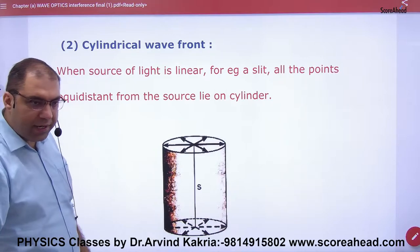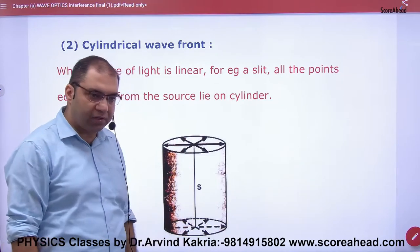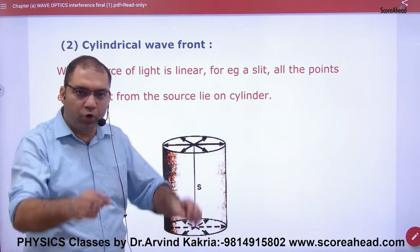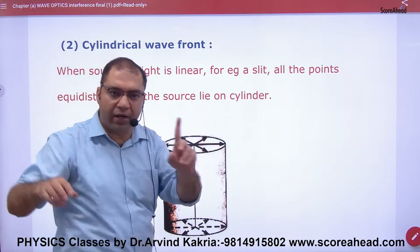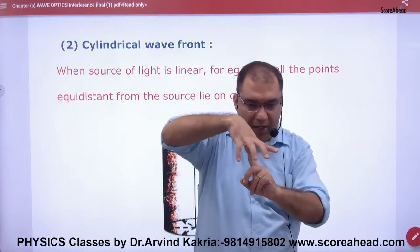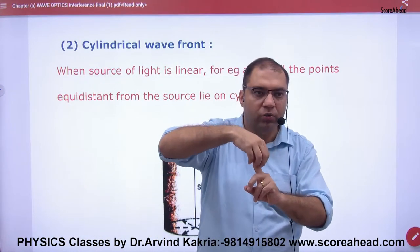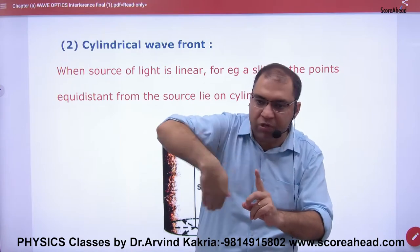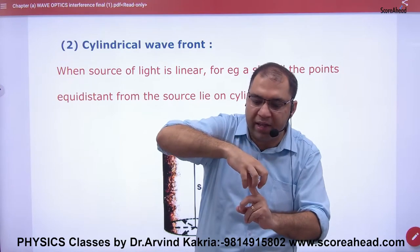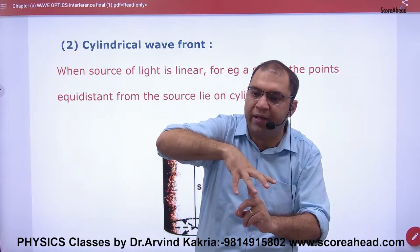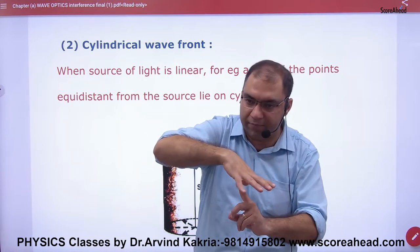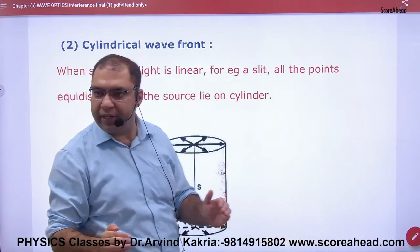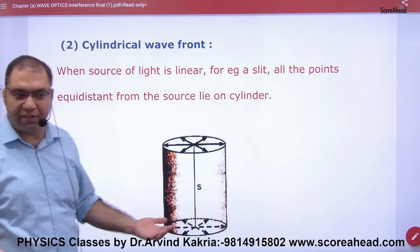In the cylindrical wavefront, if the source is a slit — imagine a long tube with light emitting from each side. If I get the locus of all those points, I will see light traveling in a cylinder — like a cylinder shape. So the wavefront is a cylindrical wavefront.